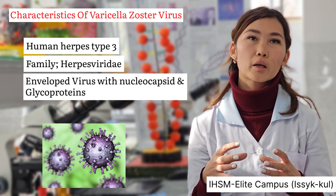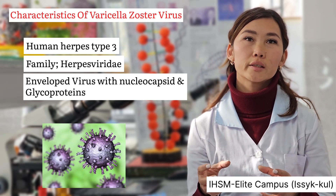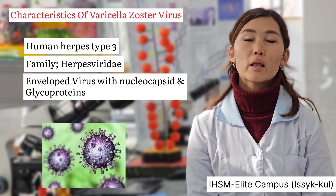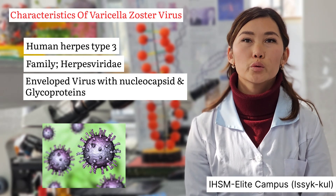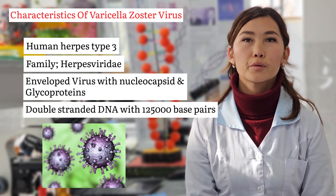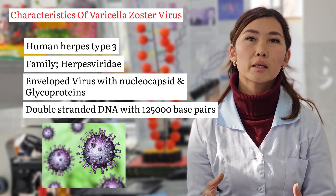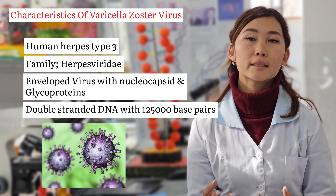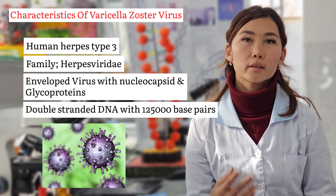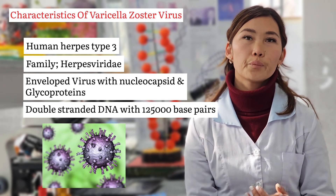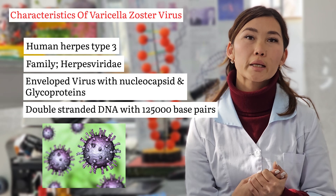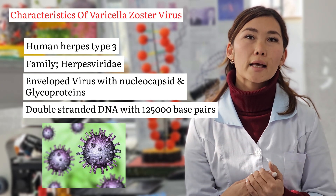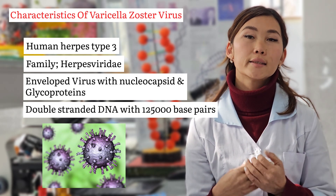The varicella zoster virus has glycoproteins, double-stranded DNA with 125,000 base pairs, a diameter of 180 to 200 nanometers, and icosahedral symmetry.